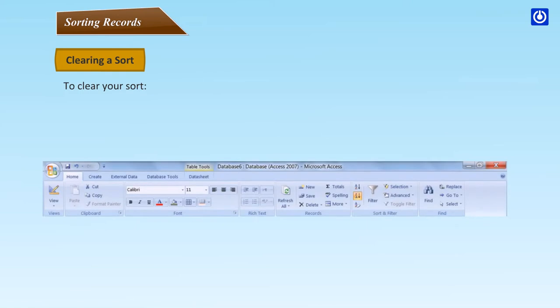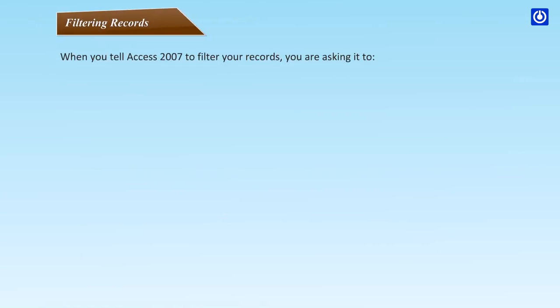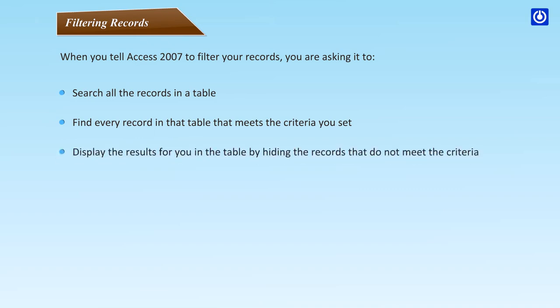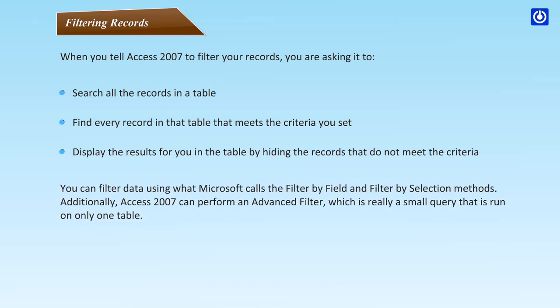Clearing a Sort: To clear your sort, click the Clear Sort command in the Sort and Filter group on the table. Filtering Records: When you filter records in Access 2007, you are asking it to search all records in a table, find every record that meets the criteria you set, and display results by hiding records that do not meet the criteria. You can filter data using Filter by Field, Filter by Selection, or an Advanced Filter, which is essentially a small query run on one table.